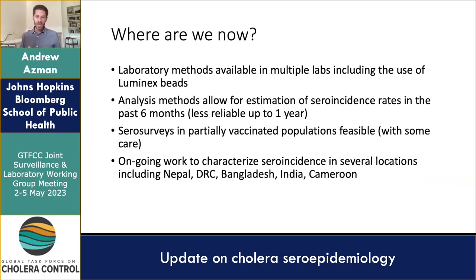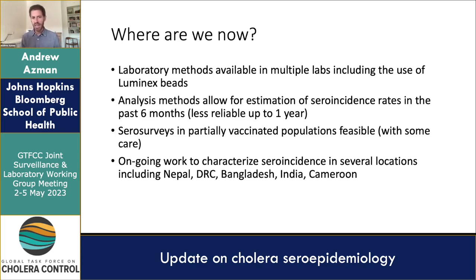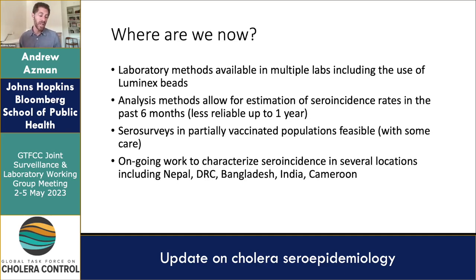As a recap: these methods are now being used in practice. Laboratory methods — vibrocidal or Luminex — are available in multiple labs throughout the world, spanning the US, Europe, Asia, and Africa. Analysis methods allow us to estimate sero-incidence rates in the past six months, sometimes a year. Sero-surveys in partially vaccinated populations are feasible with attention to details. There's ongoing work by our group and others looking at sero-incidence and longitudinal serologic studies in Nepal, DRC, Bangladesh, India, and Cameroon.